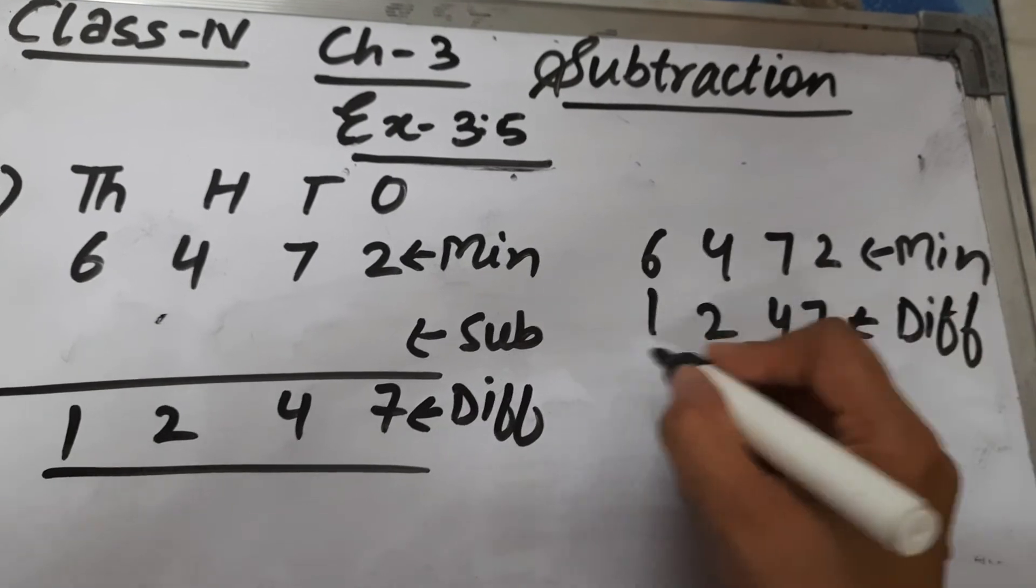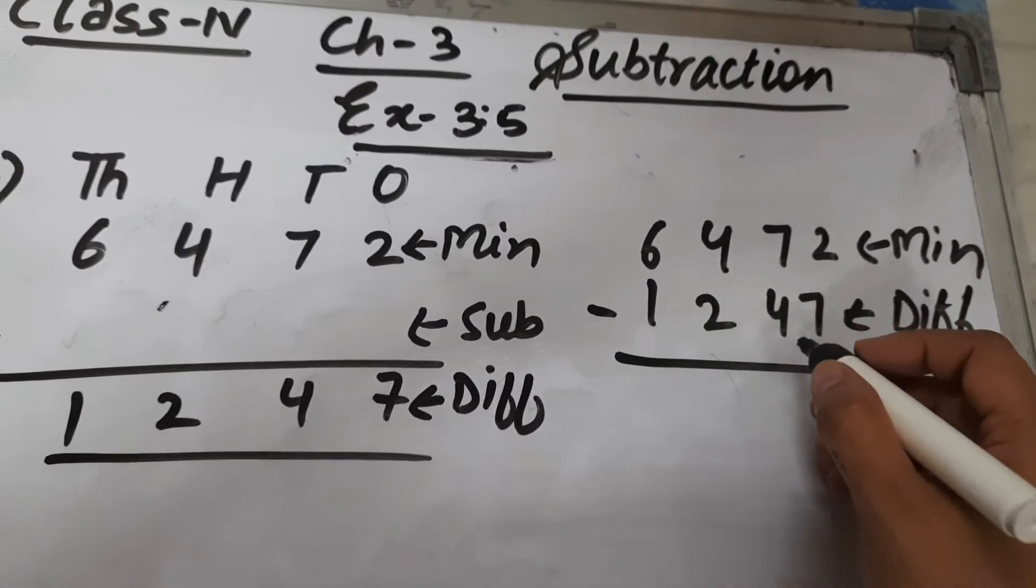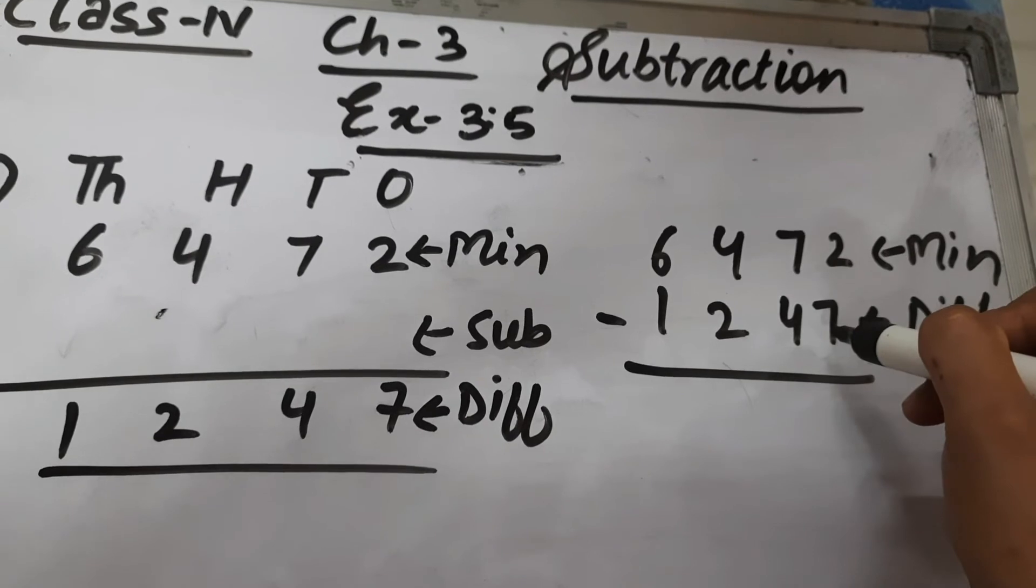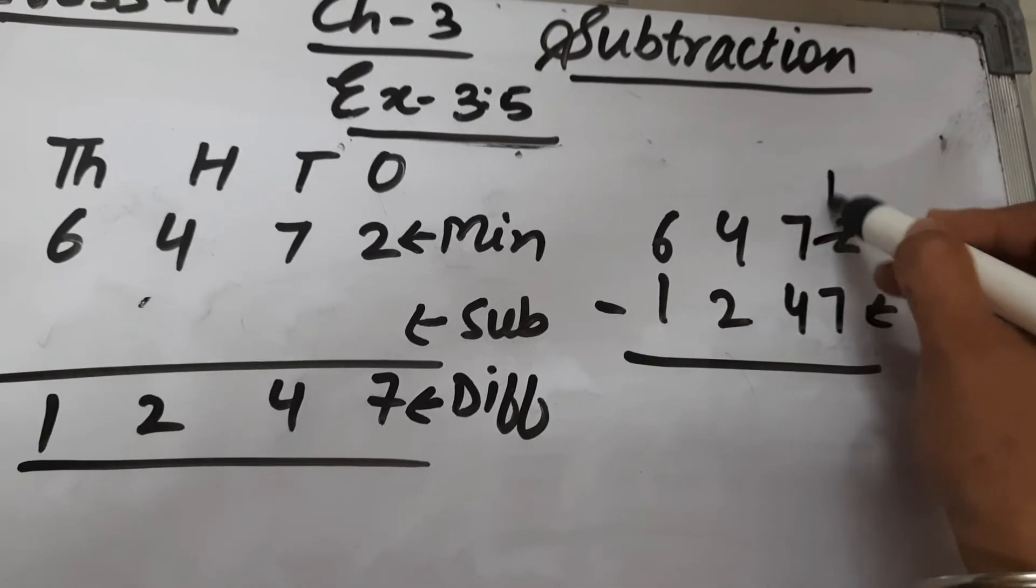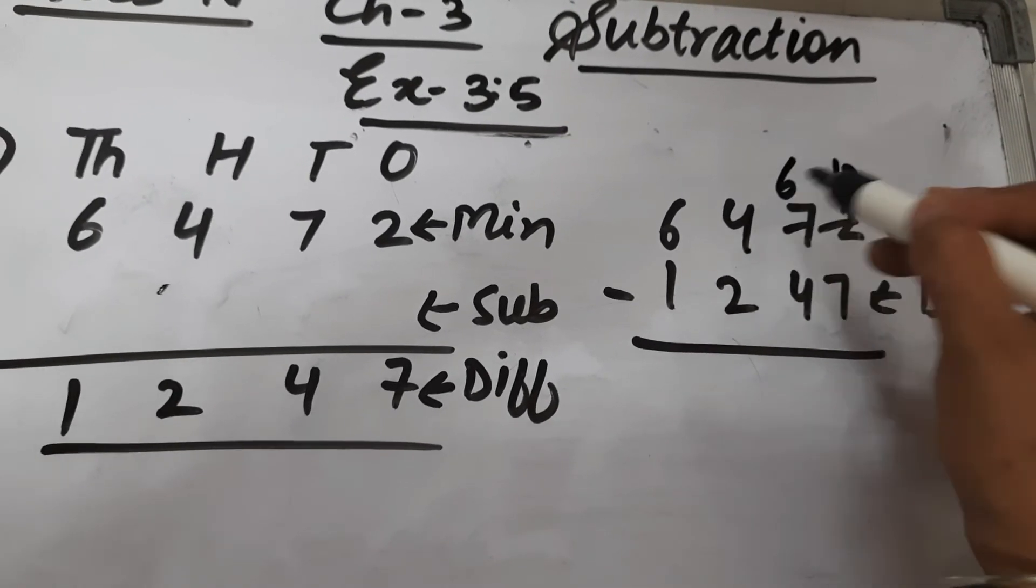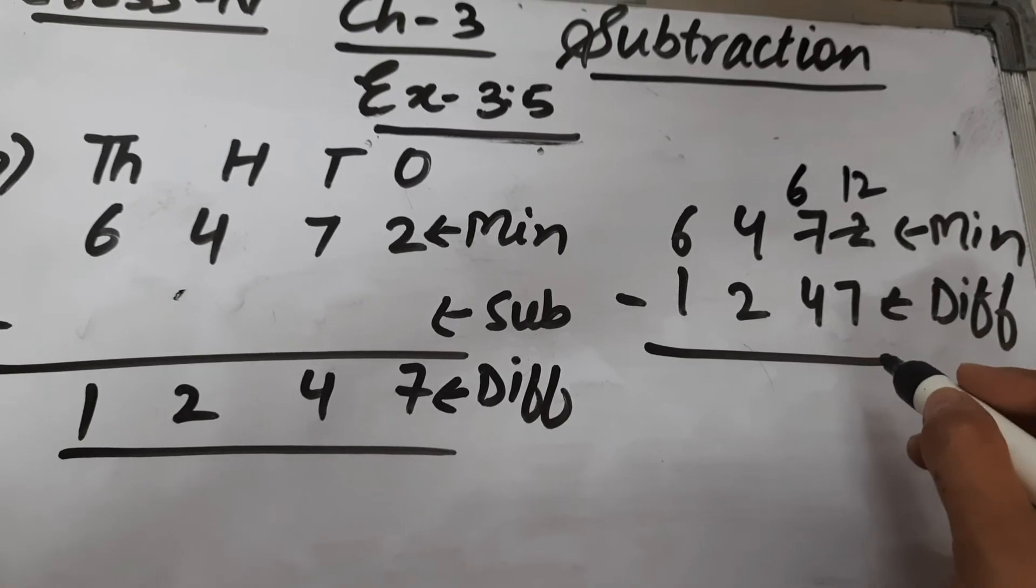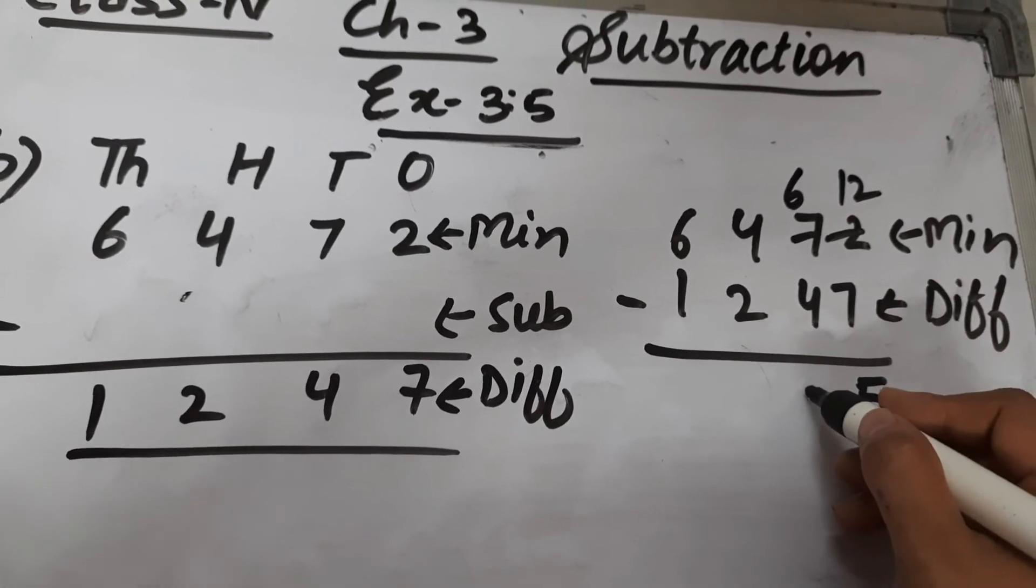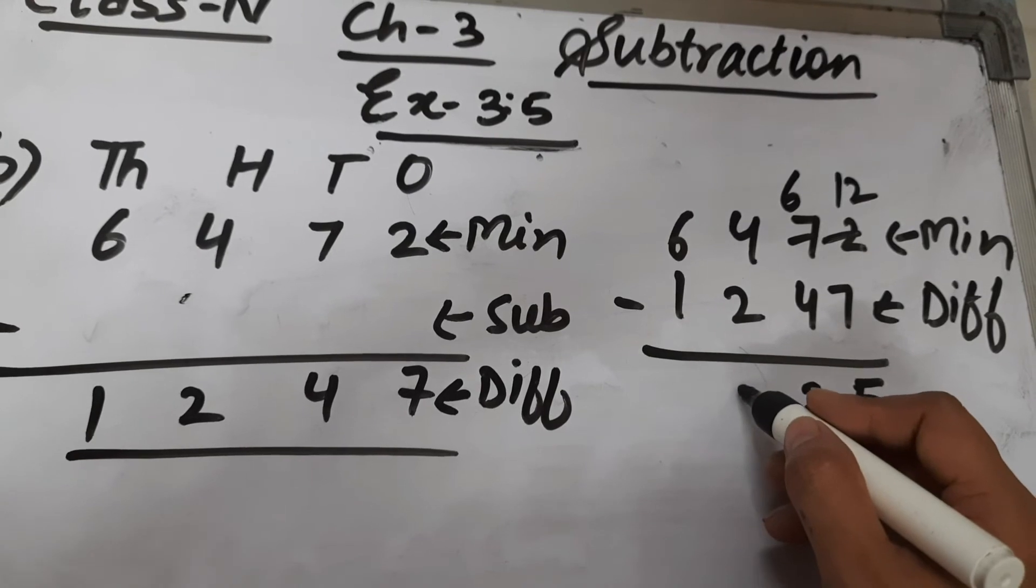12 minus 7 is 5, 6 minus 4 is 2, 4 minus 2 is 2, and 6 minus 1 is 5.